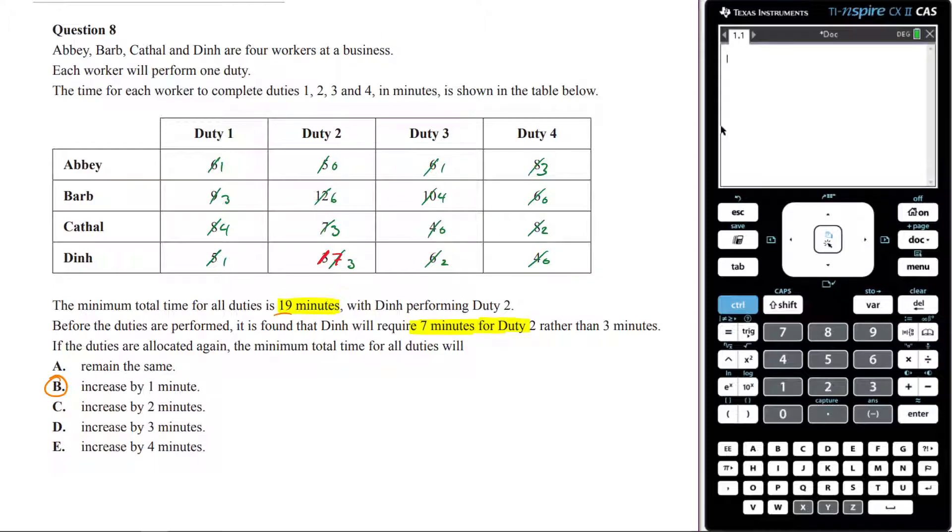Let's now do a column reduction. The smallest one in this column is 1. This will become 0, this will become 2, this will become 3, this will become 0. The smallest one is 0 here so everything stays the same. I've got a 0 there, it all stays the same. I've got a 0 there, it all stays the same.